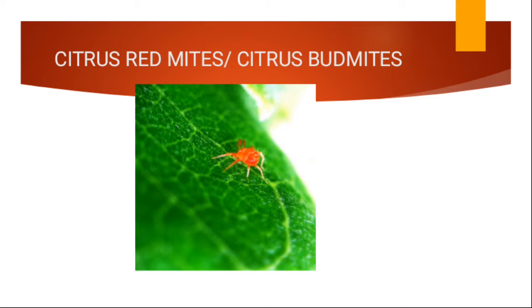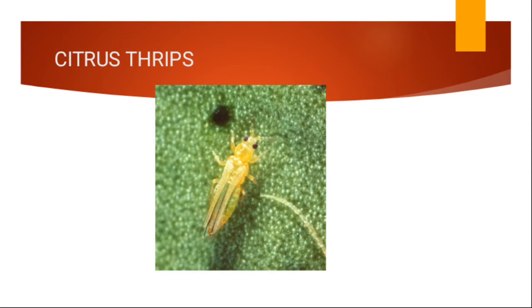You control them using chemicals. Then next we are going to look at the thrips. So that's a picture of a thrip. They will attack your leaves. They will attack the bark of the tree as well. There are chemicals that can help you to control them.